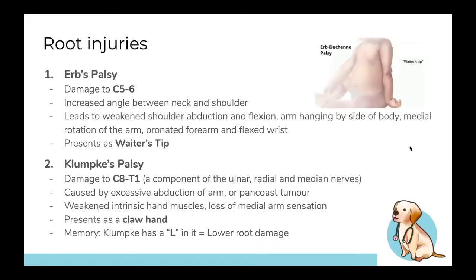You can have damage to the very root of your brachial plexus. Erb's palsy is when you damage the upper roots — C5 and C6, more commonly C5. If you increase the angle between your neck and shoulder, you pull on C5 or C6. Because these contribute to a number of nerves in the arm, you end up with weakened shoulder abduction, flexion, and your arm hangs by your side with the forearm pronated and wrist flexed.